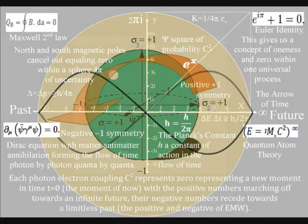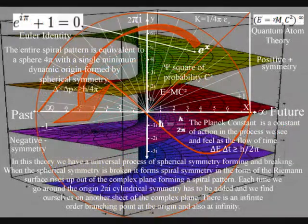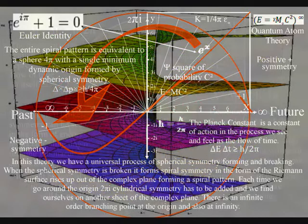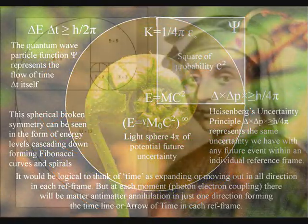When the spherical symmetry is broken, it forms spiral symmetry, forming the imperfect spiral symmetry that is visible in nature as the Fibonacci spiral.